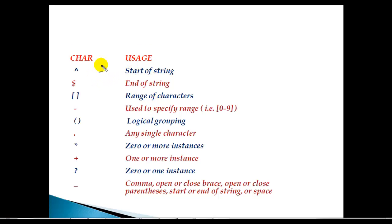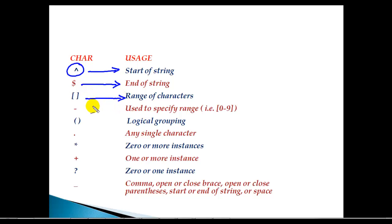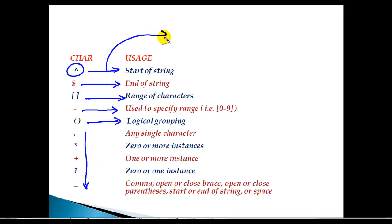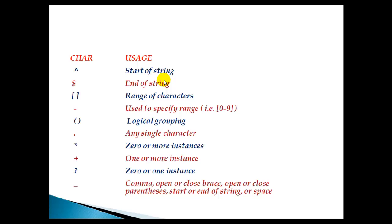Here are some of the special characters used. The caret symbol represents the beginning of the string, and dollar represents the ending of the string. Square brackets define a range of characters, and a hyphen represents the range used to specify that range. These are some of the special characters used to match prefixes based on autonomous system path information.